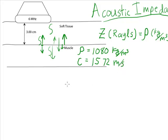So I can figure out the impedance of the muscle tissue by taking the density times the speed of propagation. So that's equal to 1,080 kilograms per cubic meter times 1,572 meters per second.